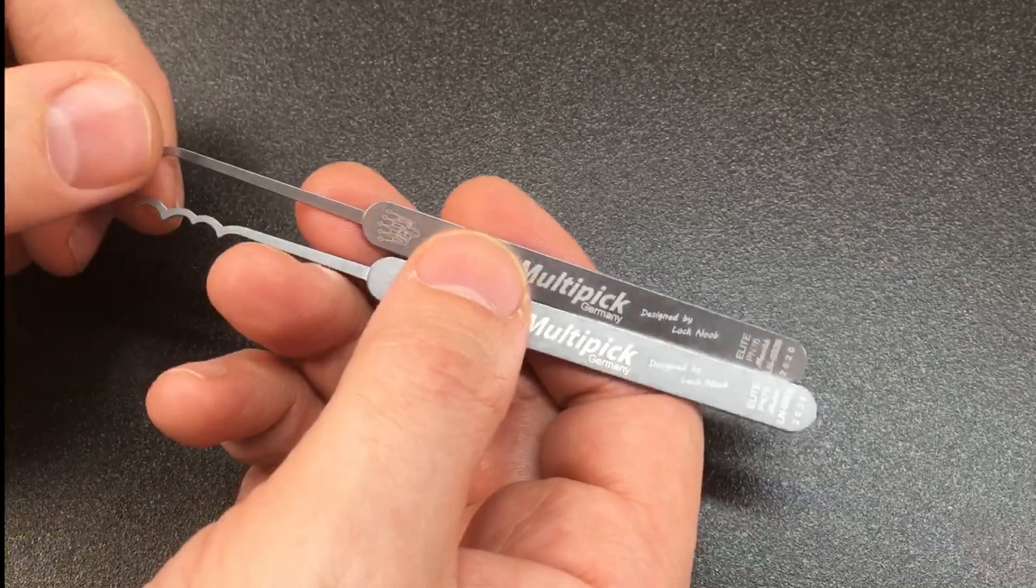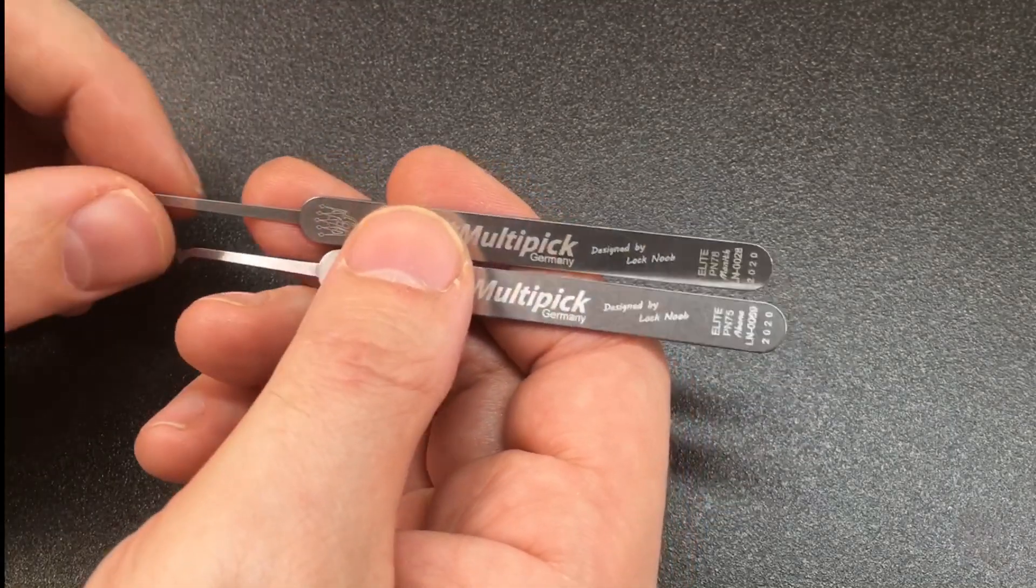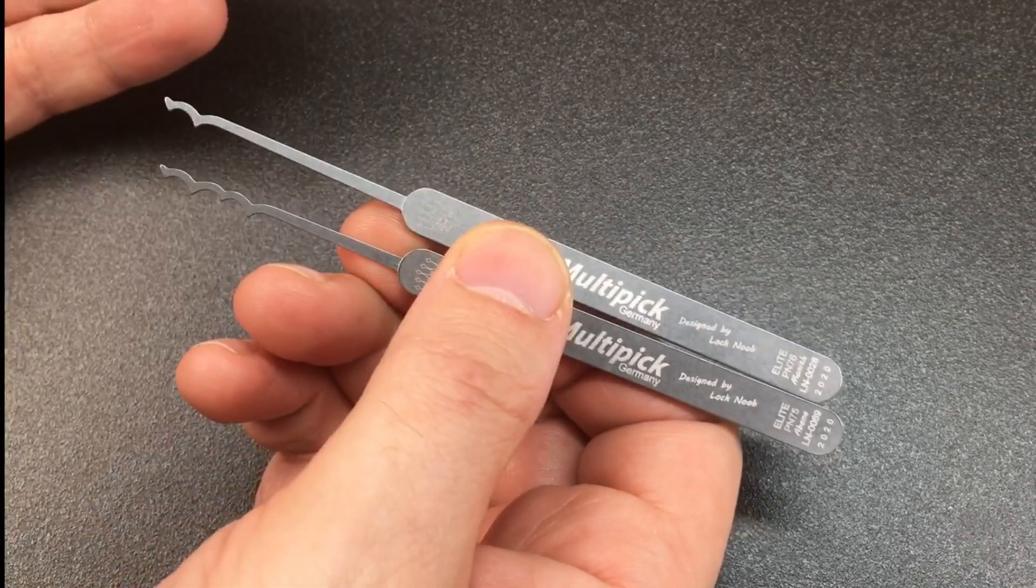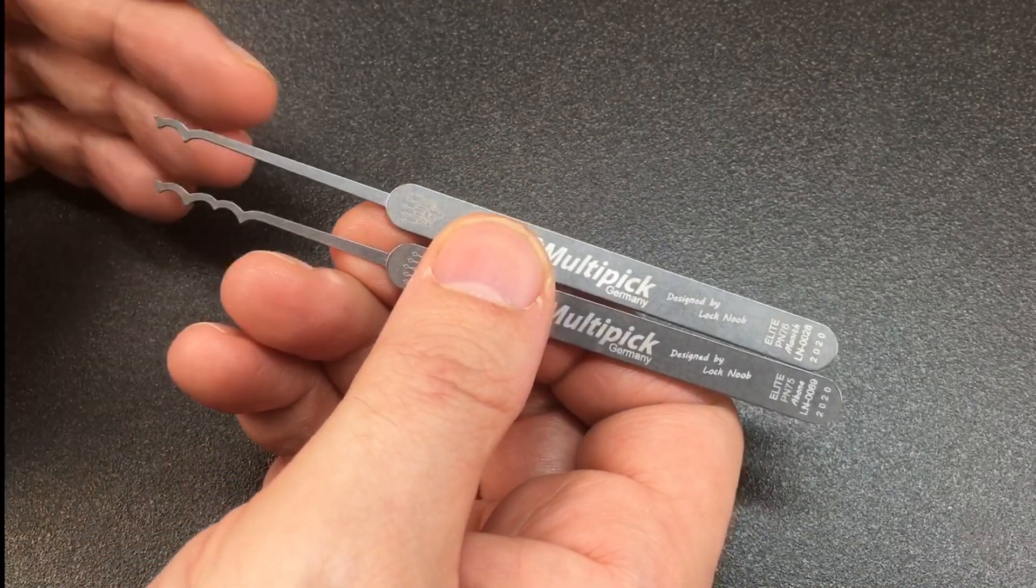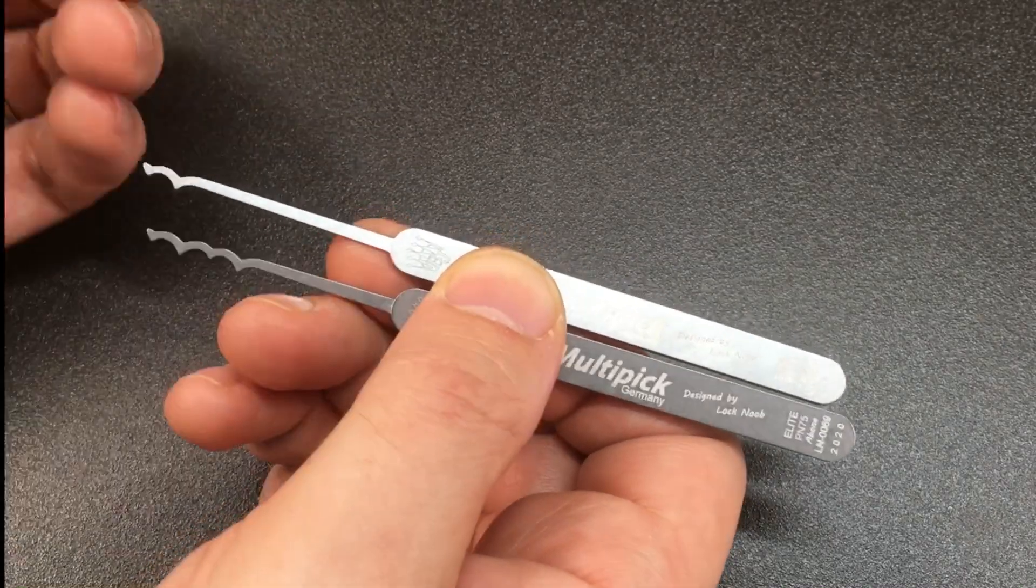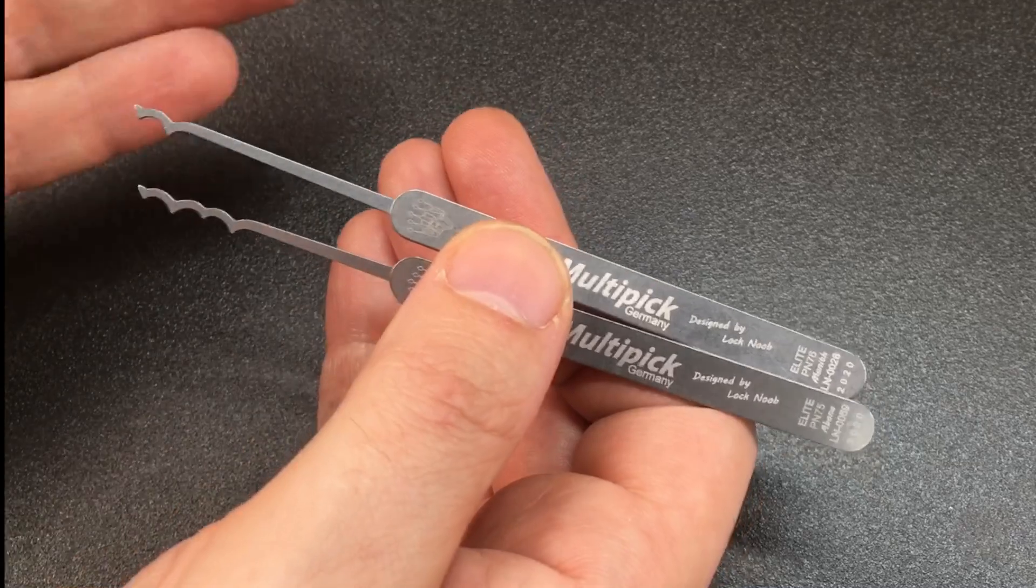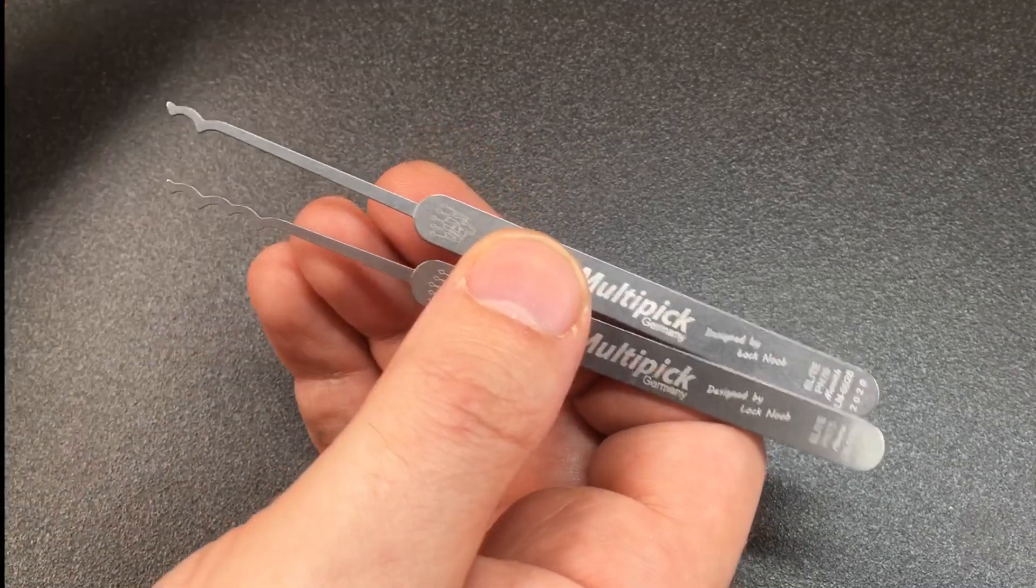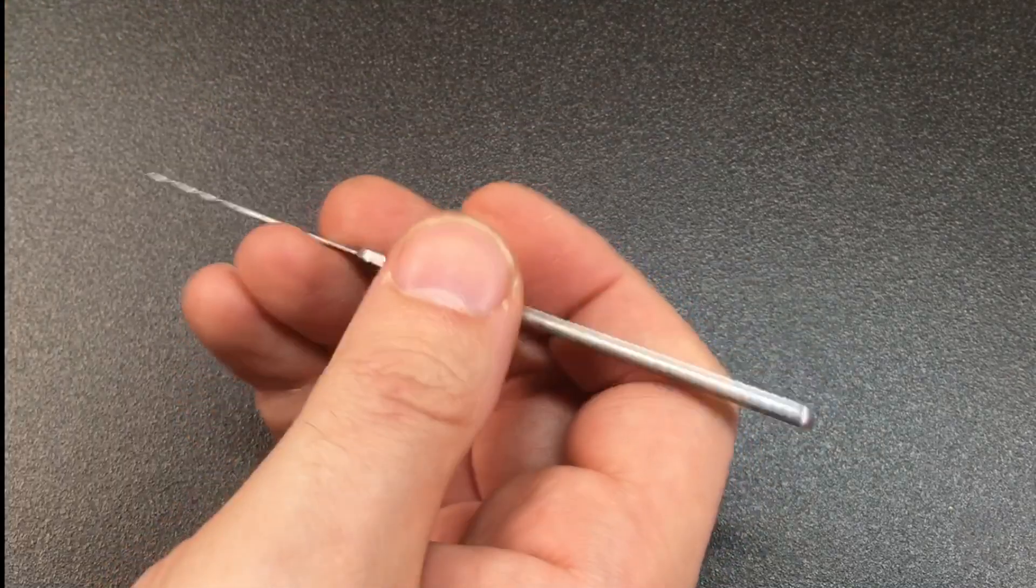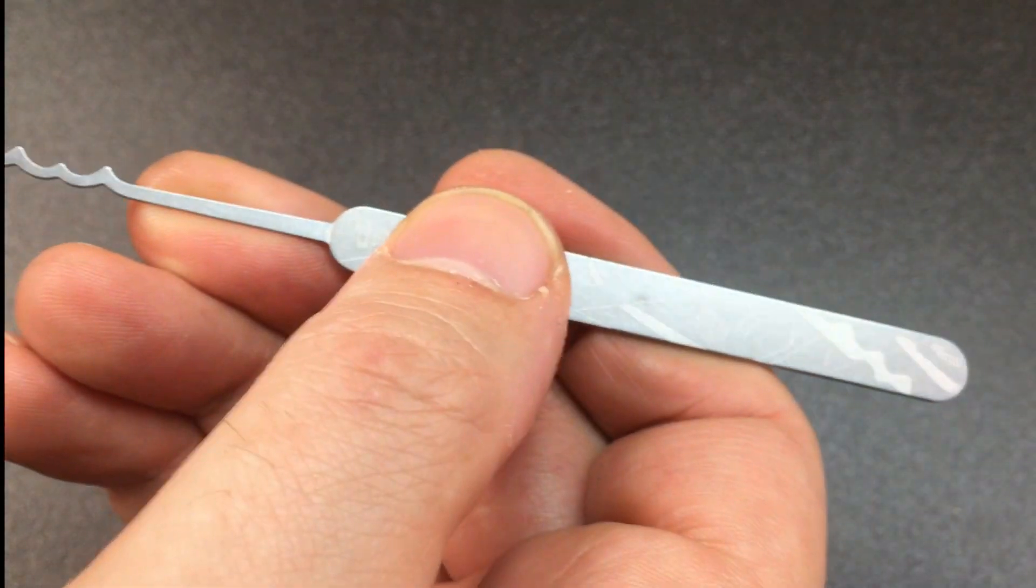So what are they, how do they work, what's my inspiration? I really like traditional lock picks including things like the snake rake and the city rake, but I don't find them very dynamic. They're a little bit stiff. They do one job and they do it really well, but they're not very dynamic.